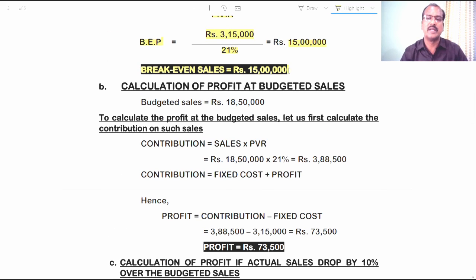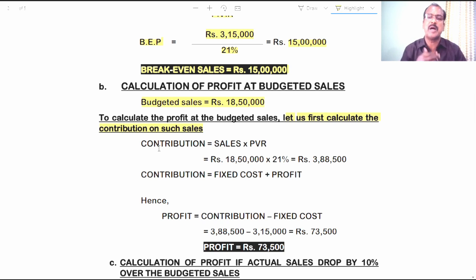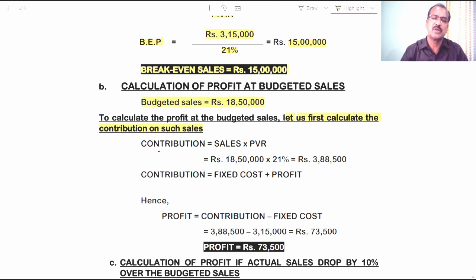Now let's answer question 2 in the same problem: calculation of profit at budgeted sales. We were informed that the budgeted sales is 18,50,000 rupees. To calculate profit at the budgeted sales, let us first calculate contribution on the sales. Contribution is equal to sales into PVR — a very popular formula used in many problems. So, 18,50,000 into 21% gives us 3,88,500 rupees as contribution.